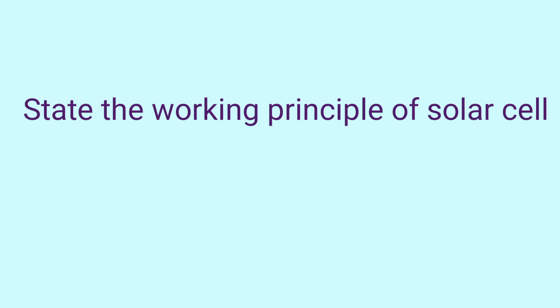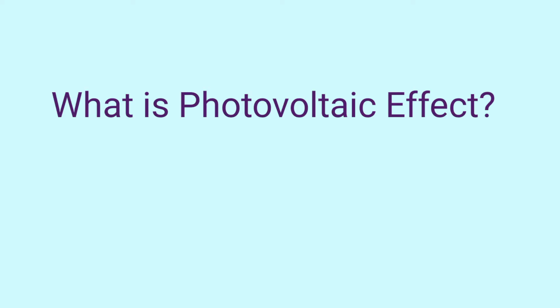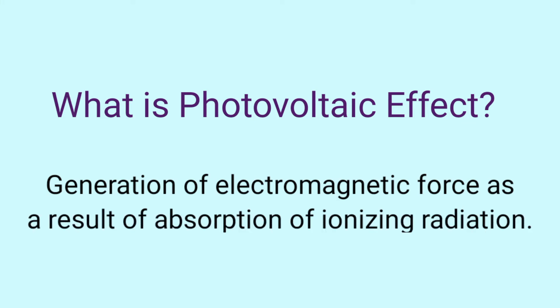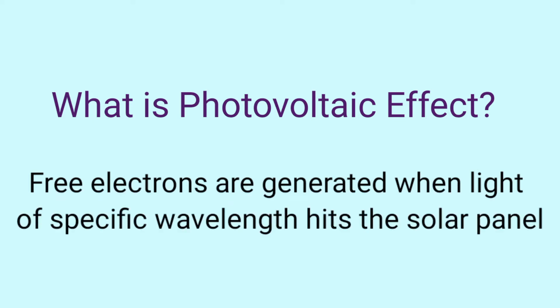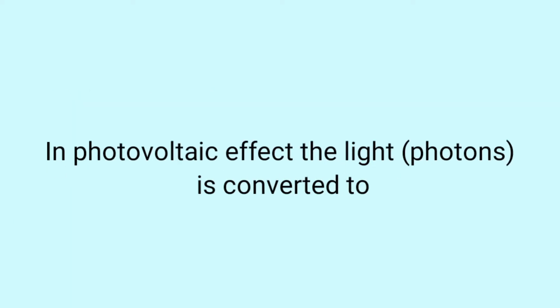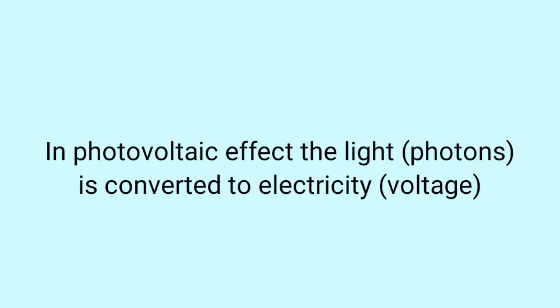State the working principle of solar cell, i.e., photovoltaic effect. What is photovoltaic effect? It is the generation of electromagnetic force as a result of absorption of ionizing radiation. Free electrons are generated when light of specific wavelength hits the solar panel. In photovoltaic effect, light photons are converted to electrical voltage — thus the name photovoltaic.